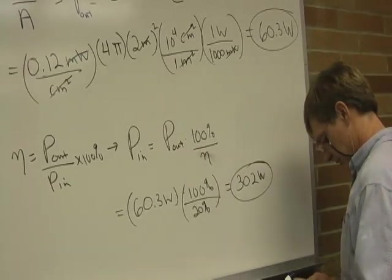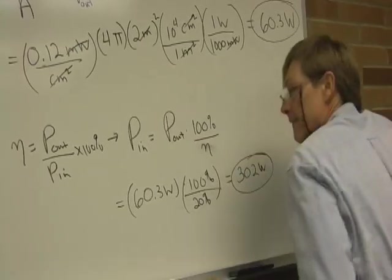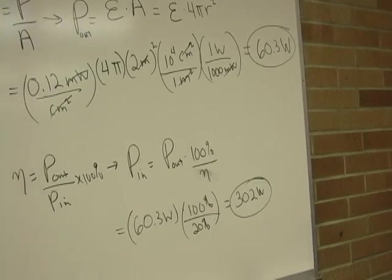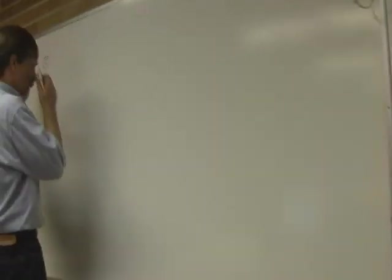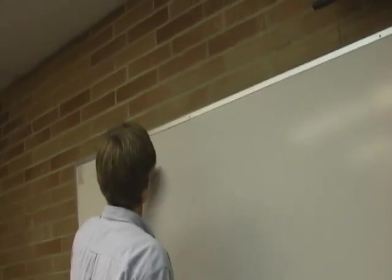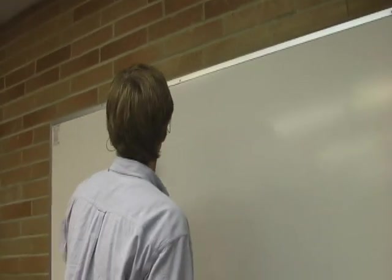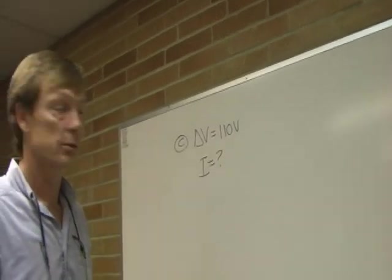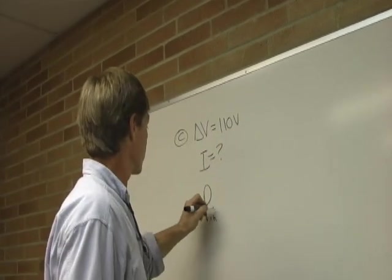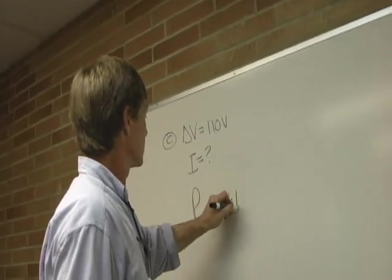We'll call it C. If the voltage is 110 volts, what's the current? Let's see. The input power is the electrical, which is the voltage times the current.